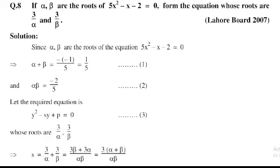The sum of roots, alpha + beta, equals −b/a. So substituting, −(−1)/5 = 1/5. This is Equation Number 1.